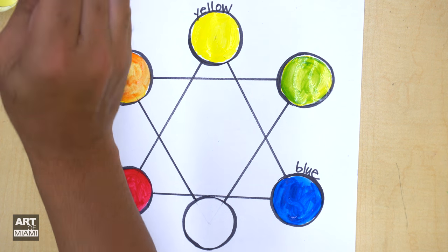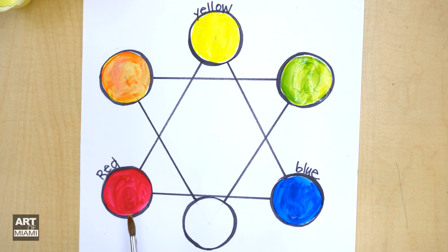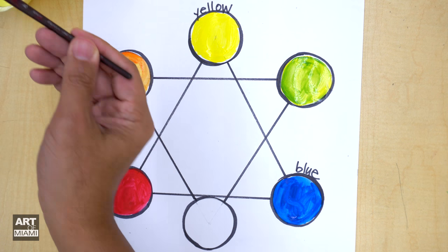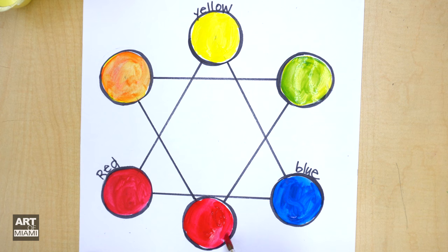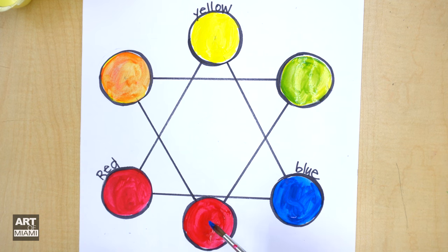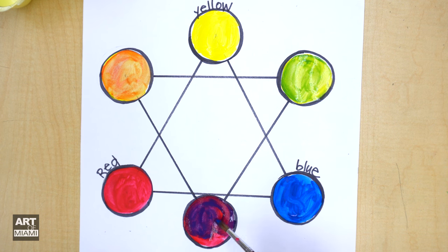All right, we're ready for the last color. So now it's purple, which is between red and blue. And I'm going to go with red. Red is lighter, at least in this case. So red first. Try to get the edges. Okay. All right, now we're ready for the darker color, blue. That's a nice purple.